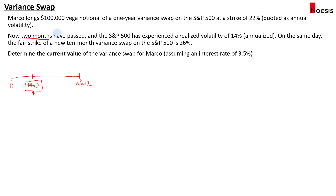What we have in the information is that for the past two months, the realized volatility is 14%. And if we were to enter into a new 10-month variance swap, then the fair strike for the next 10 months is 26%. So to calculate the current value of the variance swap, we will need a few steps.